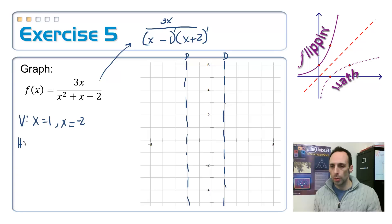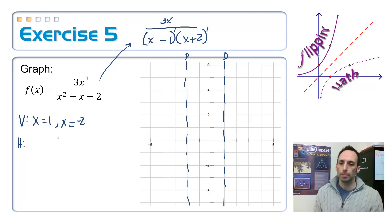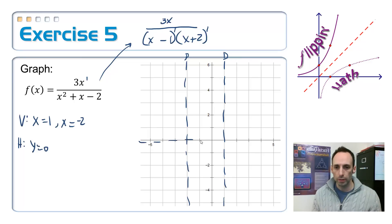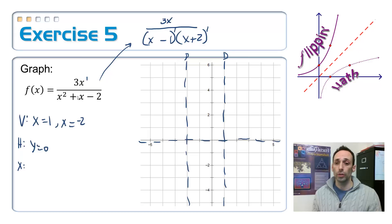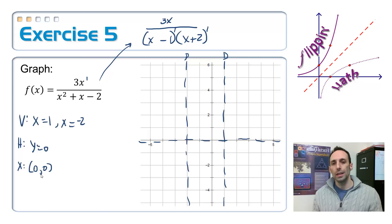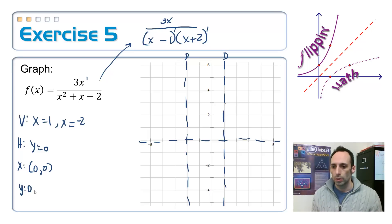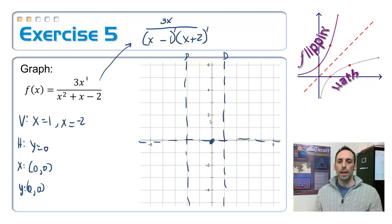Horizontal asymptote — do I even have one? The degree of the top is 1, the bottom is 2, the bottom is bigger than the top, so it's y equals 0. Dash that in. Now, get some points — how about x-intercepts? x-intercepts are where the top's equal to zero, that's just (0, 0). And if the x-intercept is (0, 0), then the y-intercept is also (0, 0) — the origin.